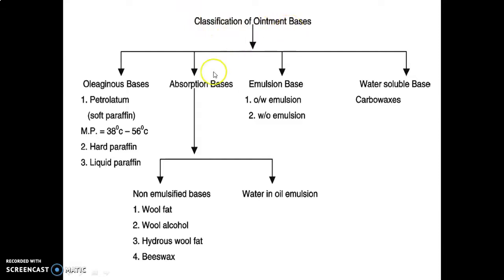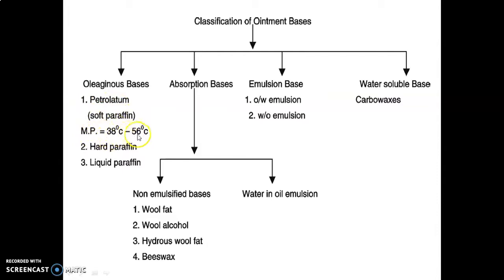There are four main classes of ointment bases: oleaginous base, absorption base, emulsion base, and water-soluble base. In oleaginous bases, the first type is petroleum (soft paraffin), which has a melting point of 38°C to 56°C; the second is hard paraffin; and the third is liquid paraffin.